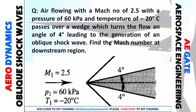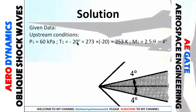There will be occurrence of an oblique shockwave. Here are the given data. I have converted minus 20 degrees Celsius to Kelvin: minus 20 plus 273 gives us 253 Kelvin. The upstream Mach number M1 is 2.5. Theta is 4 degrees, because from the direction of flow it is deviated 4 degrees.